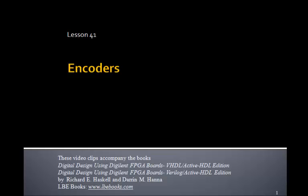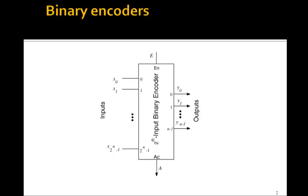This is lesson 41 on encoders. Now an encoder is just the opposite of a decoder. So remember a decoder had n inputs and 2 to the n outputs, so an encoder has 2 to the n inputs and n outputs.